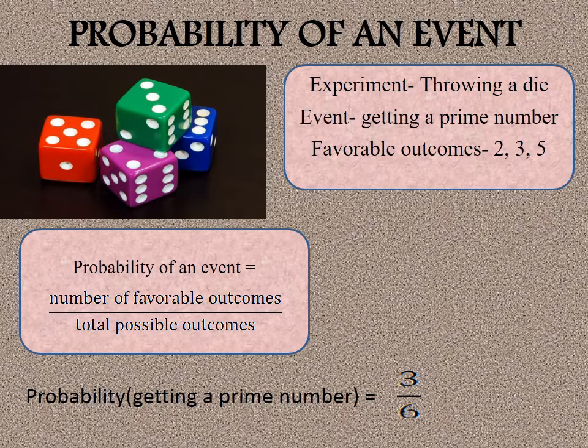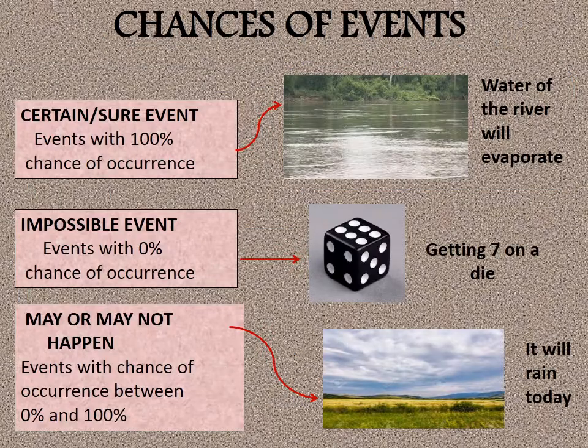Next we come to the calculation of probability. The experiment is throwing a die, the event is getting a prime number, and the favorable outcomes are 2, 3, and 5. Probability is calculated by the formula: number of favorable outcomes divided by the total number of possible outcomes. Therefore, probability of getting a prime number is 3/6, which can also be written as 1/2.